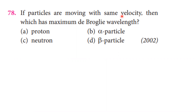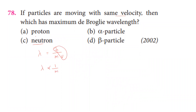Particles are moving with the same velocity — which has the maximum de Broglie wavelength? The de Broglie wavelength formula is h divided by momentum, which equals h divided by mass times velocity. Since h and velocity are constant, the wavelength is inversely proportional to mass. Among neutron, proton, alpha particle, and beta particle, the one with the smallest mass has the largest wavelength. The answer is the fourth option — beta particle.